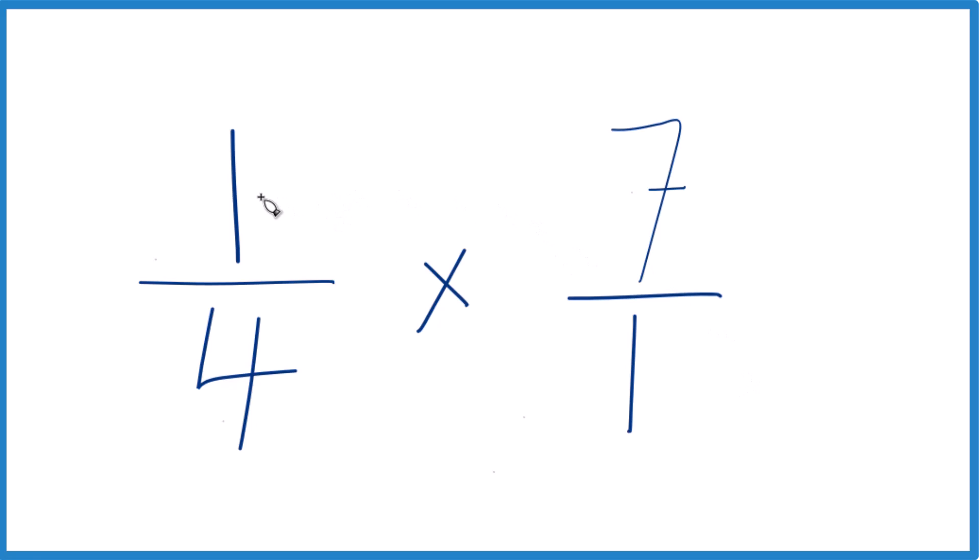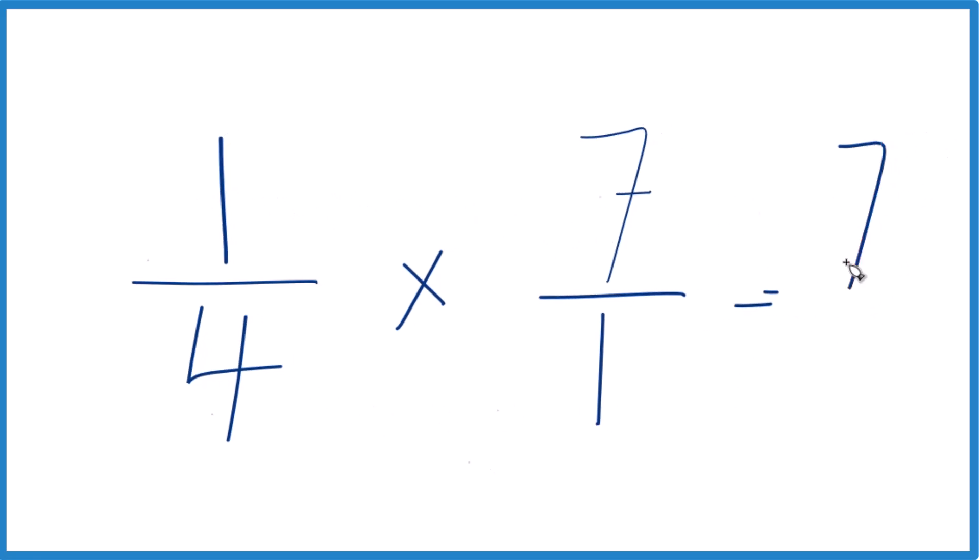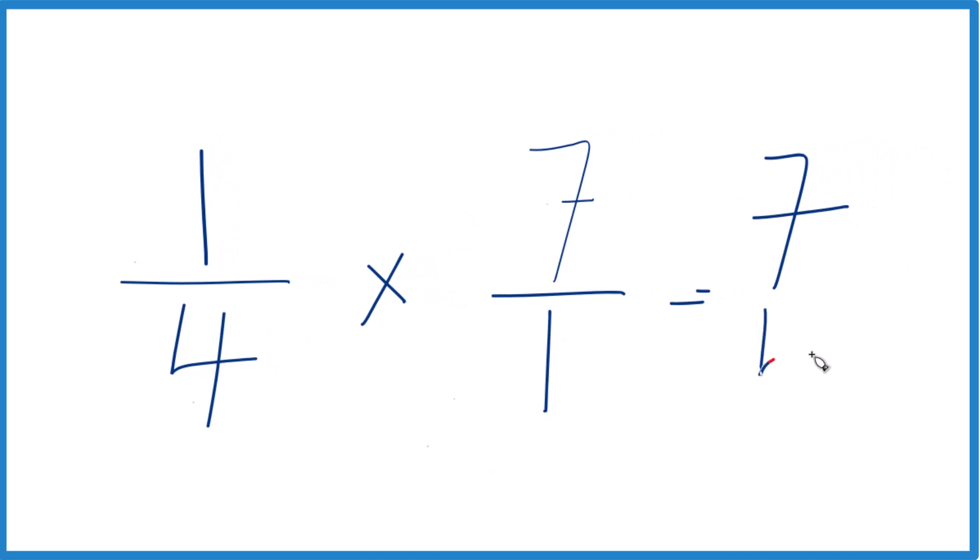We're multiplying fractions. We're just going to multiply the numerators, then the denominators. 1 times 7 is 7. 4 times 1, that's 4. And one-fourth of 7, or one-fourth times 7, that's seven-fourths.